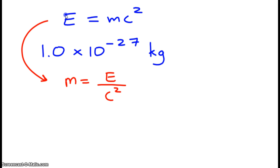We already know that 1U is equal to roughly, or packs in, roughly 931.5 megaelectron volts of energy.